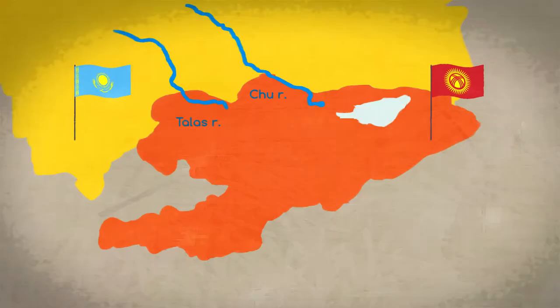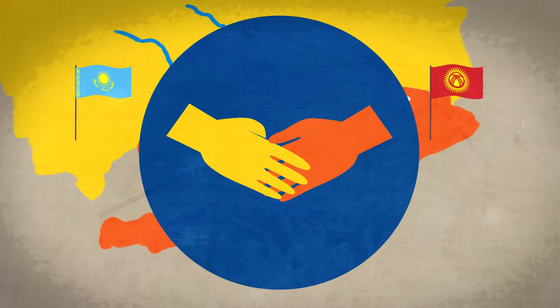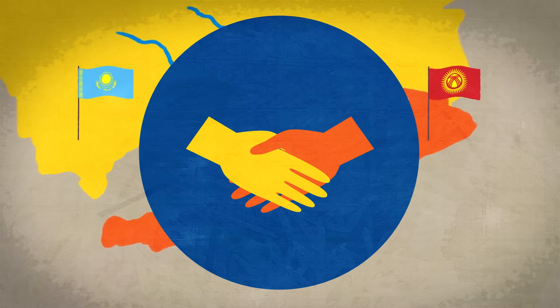Chu and Talas rivers serve as region natural arteries. Cross-border country's prosperity is founded on them.